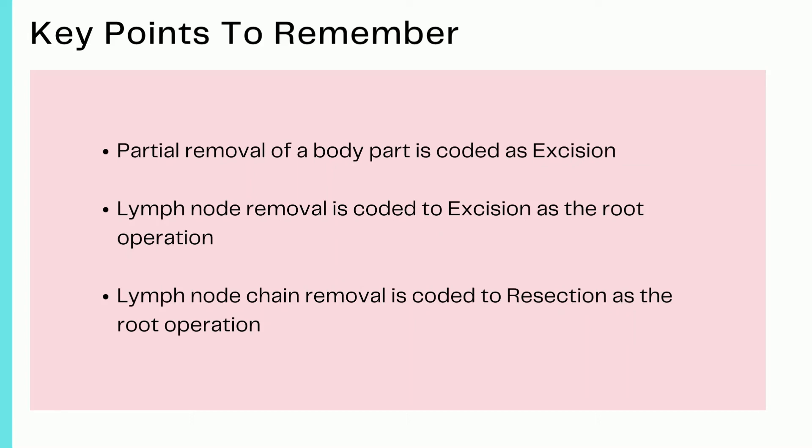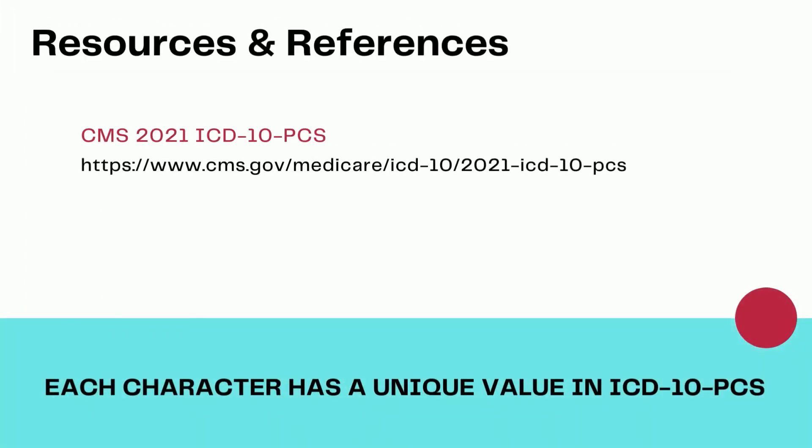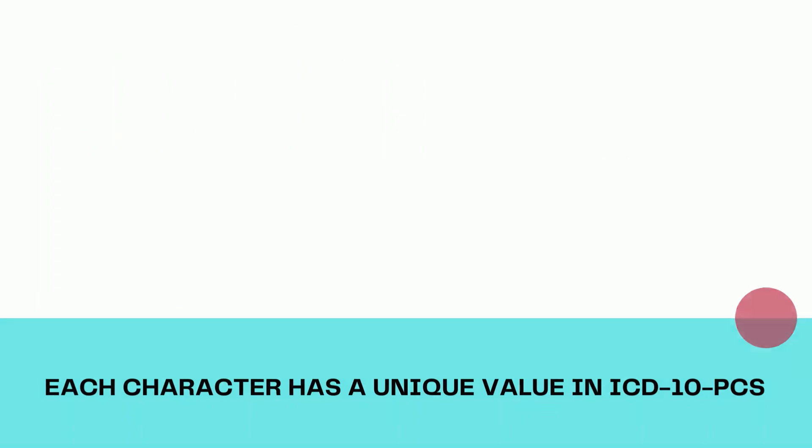If the entire lymph node chain in a particular area is removed, then it is coded as resection as the root operation. You'll find the online version of the ICD-10-PCS from the CMS link provided — I have also included this link in the description of the video, so make sure to read the description to find the resources there.